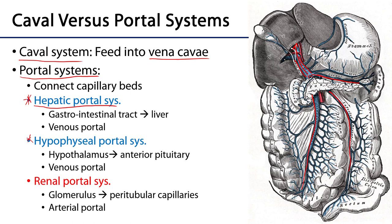There is also a renal portal system, where specialized capillary beds within the kidney — specifically the glomeruli of the nephron — connect to peritubular capillaries of the nephron. There are as many of these renal portal systems as there are nephrons in the kidney. Interestingly, this is an example of an arterial portal system, whereas the hepatic and hypophyseal portal systems are venous portal systems.